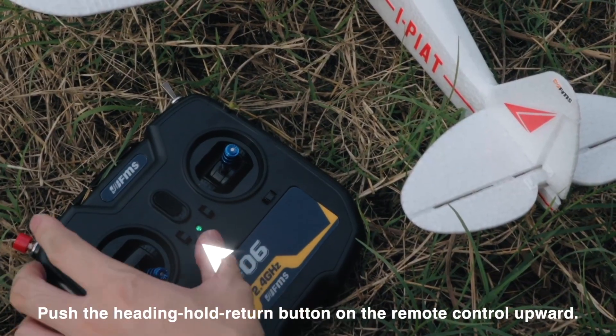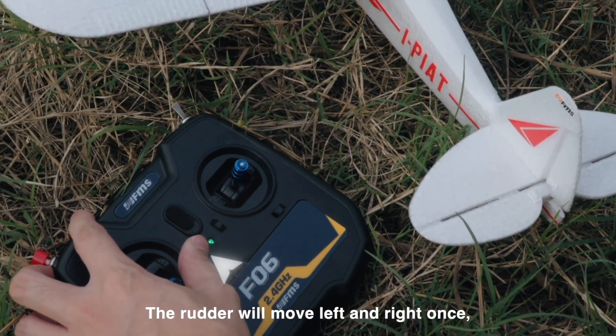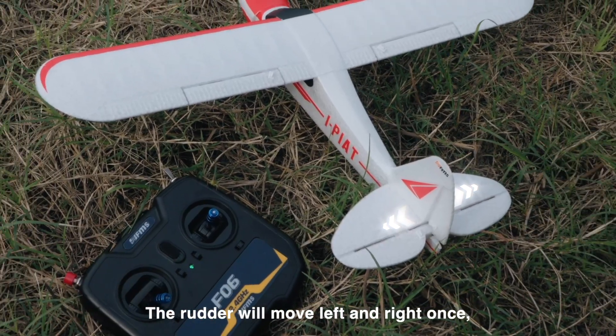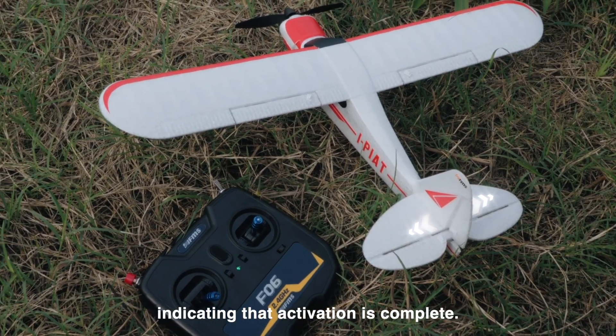Push the Heading Hold Return button on the remote control upward. The rudder will move left and right once, indicating that activation is complete.